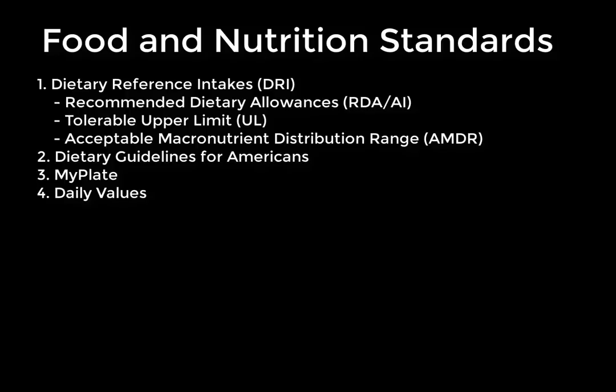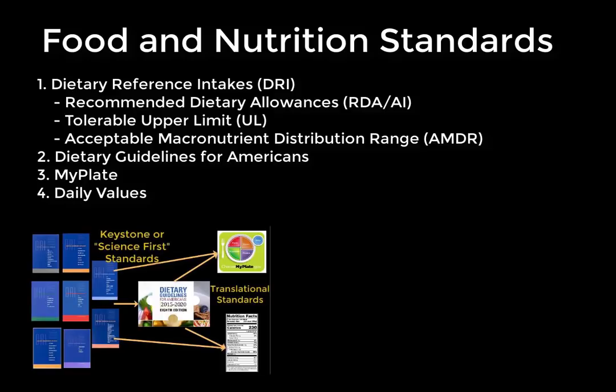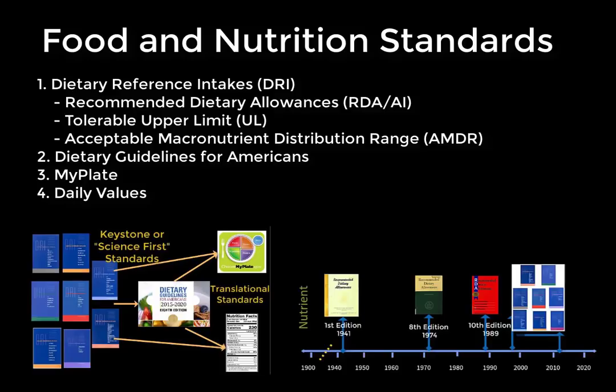In summary, we've gone over the major food and nutrition standards we'll be using this semester. They can seem very similar, but they are distinct. Using a graphic representation of how they relate to each other and understanding their historical context can help us distinguish them. It will be important to use the correct standard when doing a dietary assessment — to determine if a diet is within the recommendation or outside, and what it means if someone doesn't meet it.